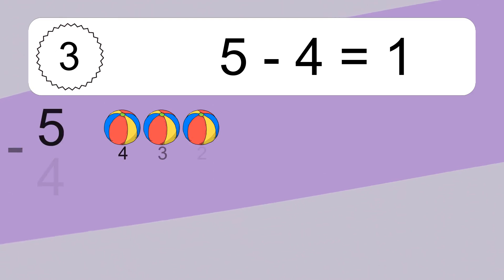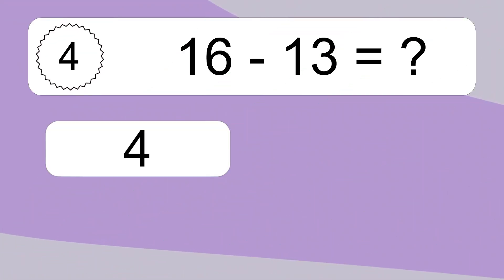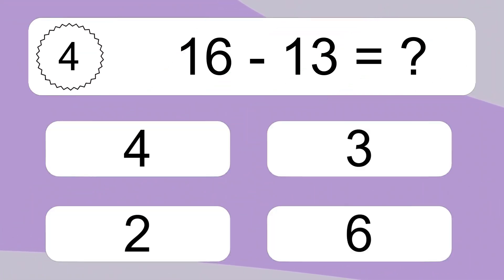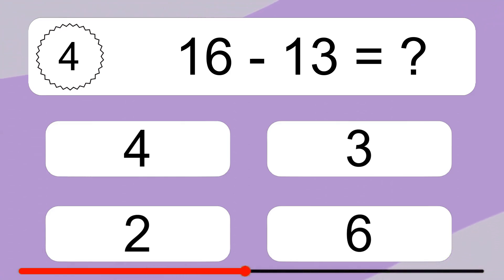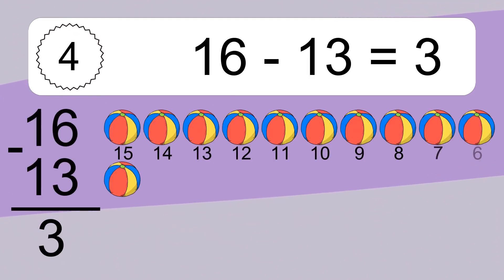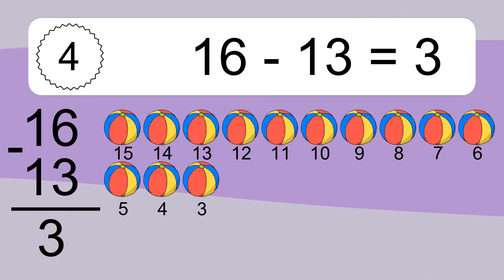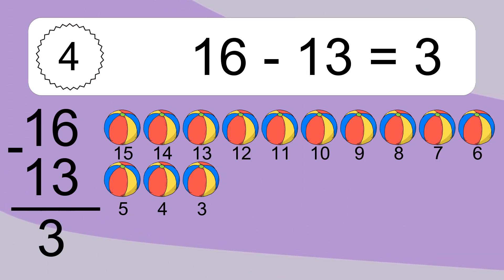5 minus 4 equals what? 5 minus 4 equals 1. Let's count it: 4, 3, 2, 1. 16 minus 13 equals what? 16 minus 13 equals 3. Let's count it: 15, 14, 13, 12, 11, 10, 9, 8, 7, 6, 5, 4, 3.